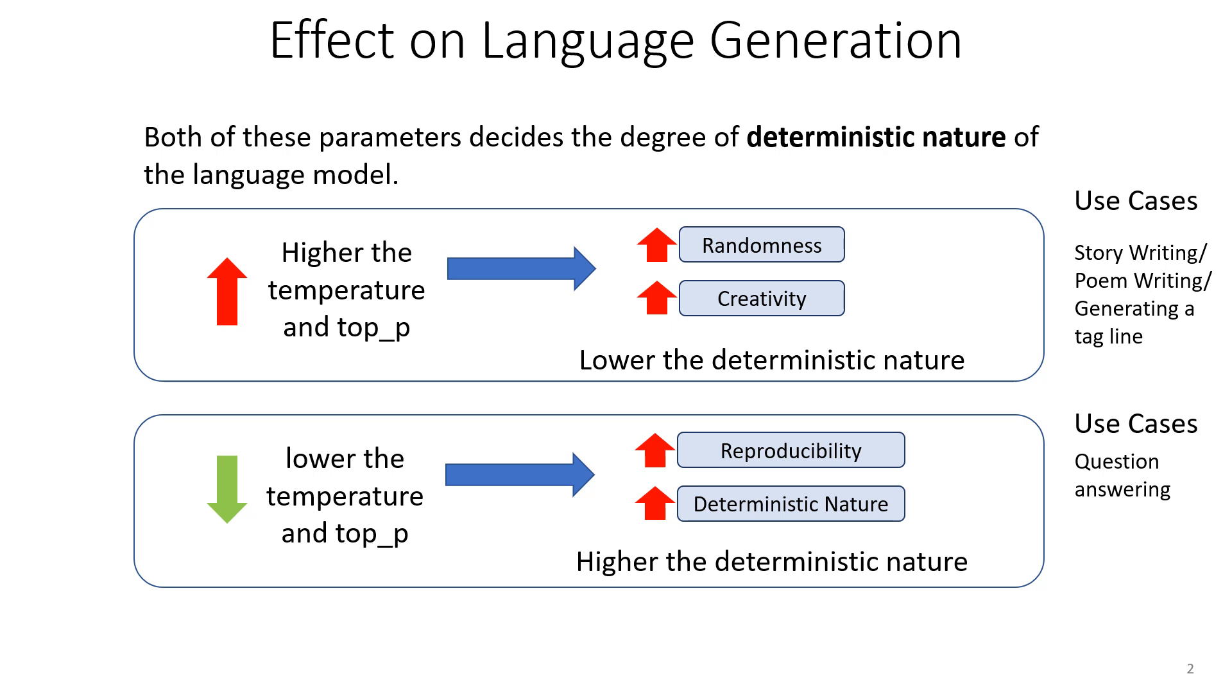For use cases such as story writing, writing poems, instances such as generating titles or taglines—in such cases we can use higher Top_P and Temperature values because we can get randomized answers and we can combine these to get more effective output.